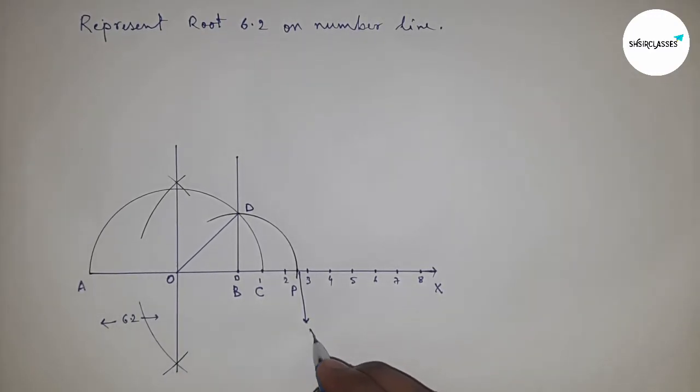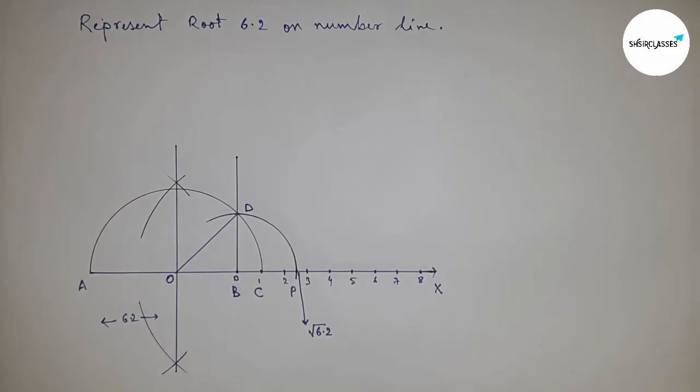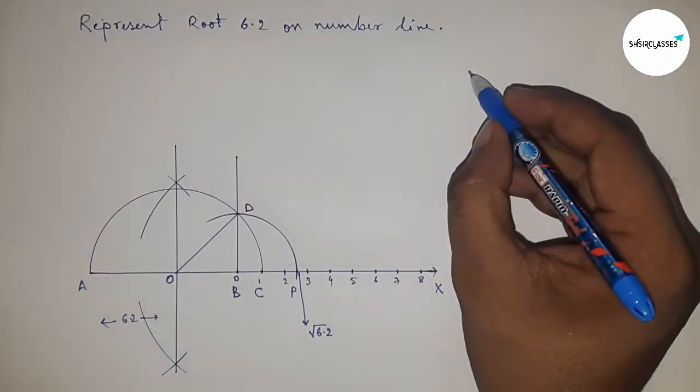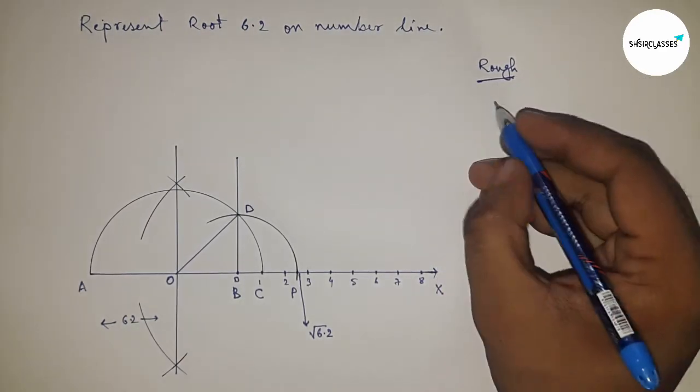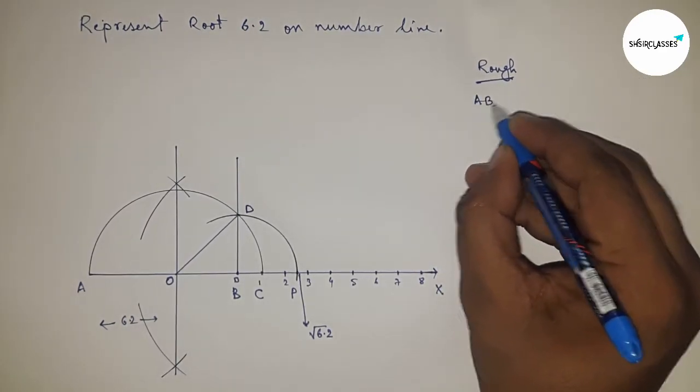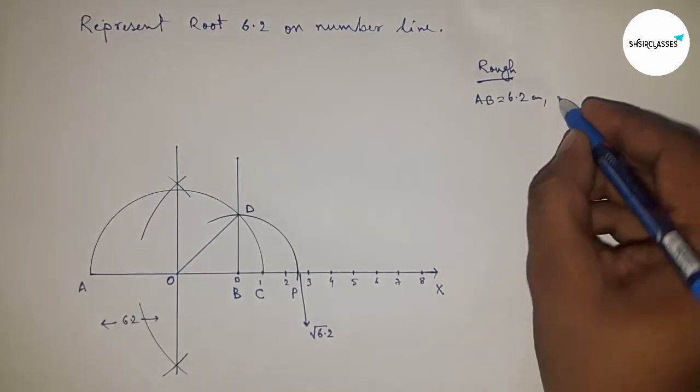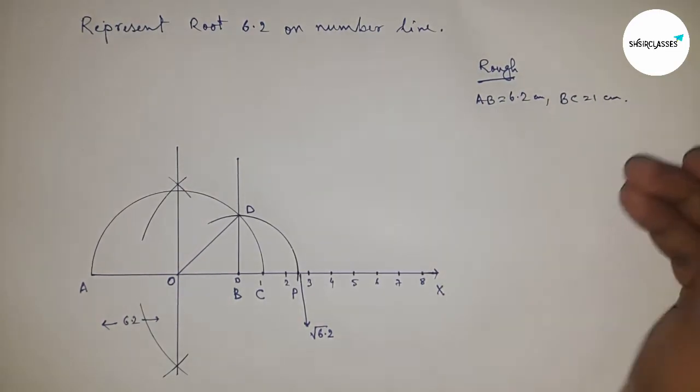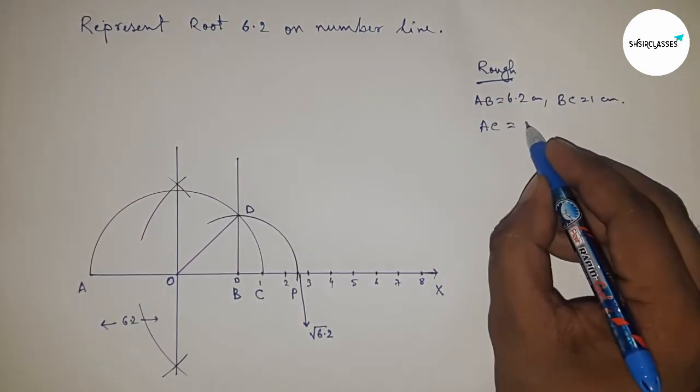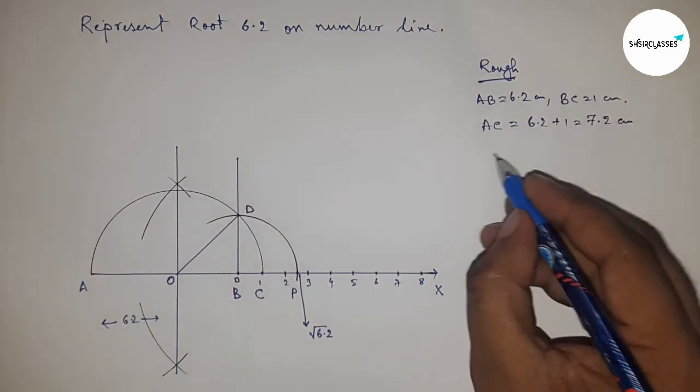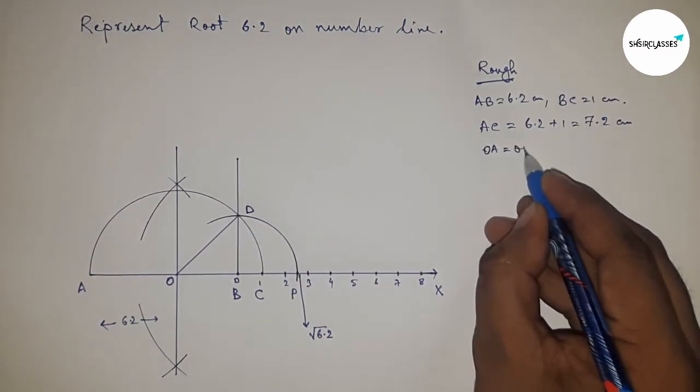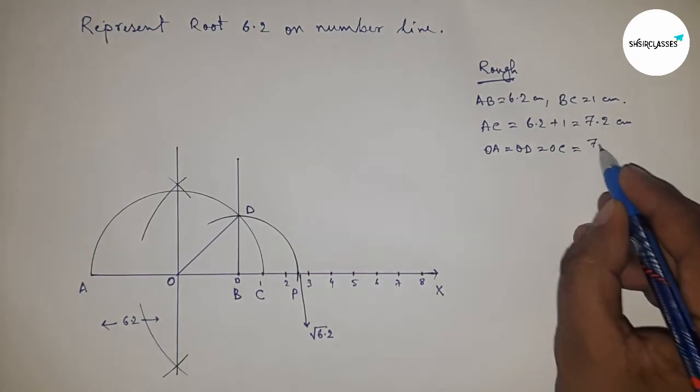Next, roughly discuss the calculation of root 6.2. So given AB equal to 6.2 and BC equal to 1 centimeter. So AC equal to 6.2 plus 1 equal to 7.2 centimeter. Now radius OA, OD, and OC equal to 7.2 by 2.